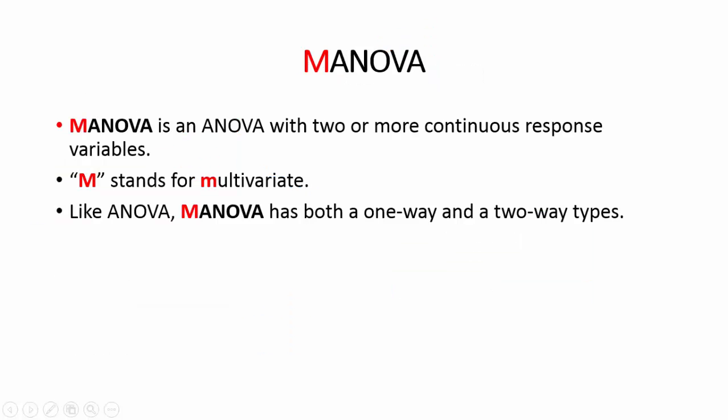Now let's move to MANOVA. MANOVA is an ANOVA with two or more continuous response variables. Here, the M stands for multivariate. And, like ANOVA, MANOVA has both a one-way and two-way type.